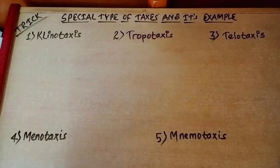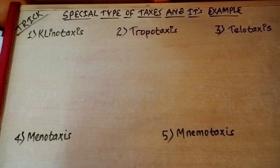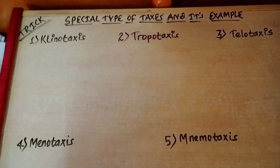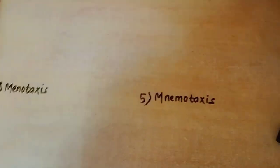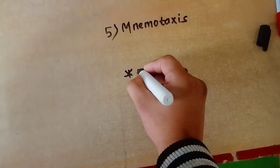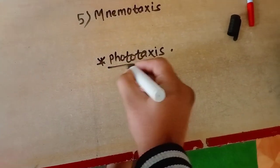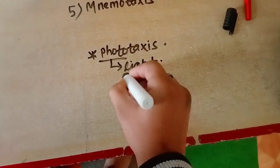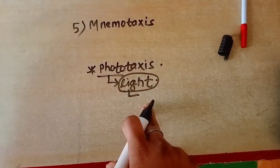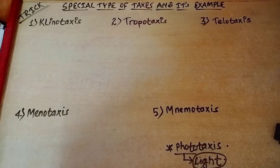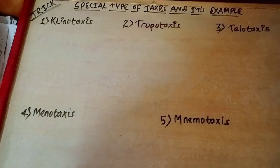Hello students, today I am going to teach you about a special type of taxis and examples. There are many more taxes except these, but those are unnecessary and very easy — you can solve those from their name only. For example, phototaxis: anyone can know that photo means light, so it means responding to light. Due to this reason, examiners don't ask those taxes whose meaning comes from their name. So if the examiner asks you any taxis, most probably it will be from these five.